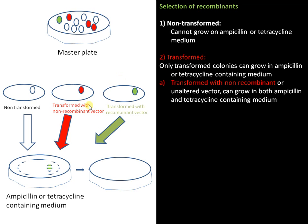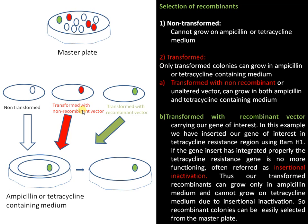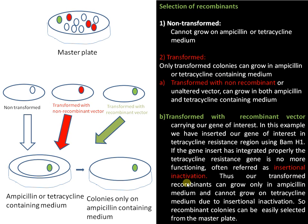For colonies transformed with recombinant vector — in this example, we inserted our gene of interest into the tetracycline resistance region using BamHI as the restriction site. Once the gene integrates into that site, the tetracycline resistance gene is no longer functioning. This process is called insertional inactivation. Thus, our transformed recombinants can grow only in ampicillin medium and cannot grow in tetracycline medium, allowing us to identify and pick out the desired colonies.